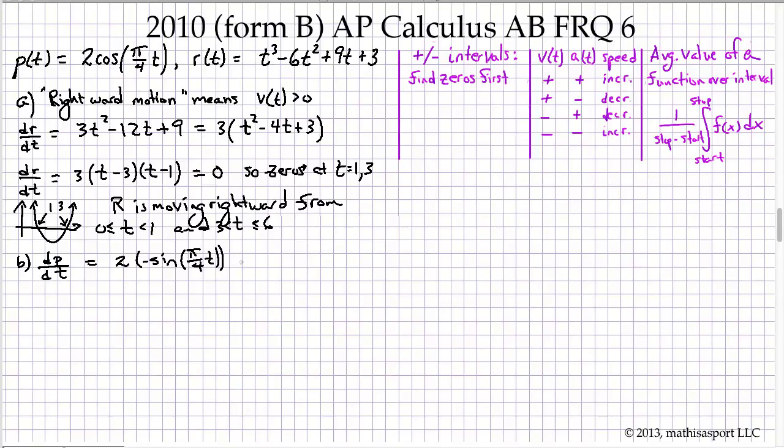That looks like 2 times negative sine of π/4t, and then we have to multiply that by π/4. So a simplified form of dp/dt: 2 over the 4 gives us a half, we've got negative π/2 sine π/4t.